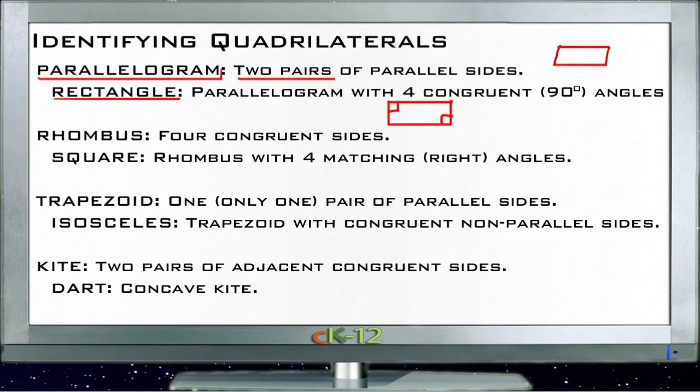A rectangle is a parallelogram with four 90 degree angles. Our second classification here is a rhombus, and a rhombus is a shape with four congruent sides. So it doesn't say anything about angles, but it does say that all four sides have to be the same length.